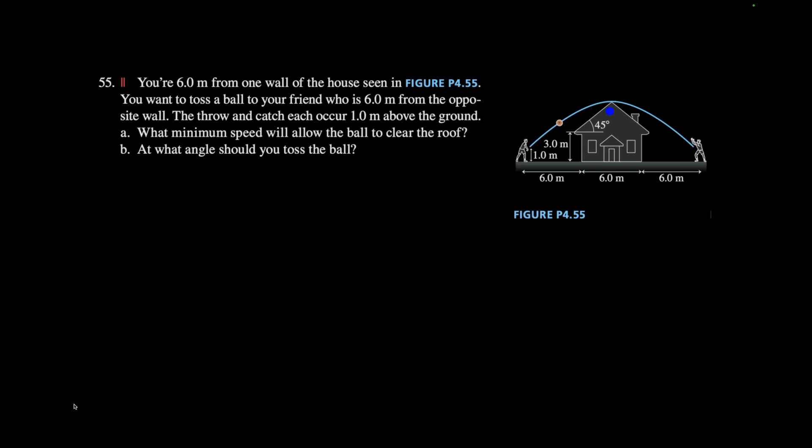If this is an isosceles triangle right in the middle, this is 3 meters because the base of the house is 6. So half of it is 3, which makes half of the roof right here 3, and this right here is also 3 meters.